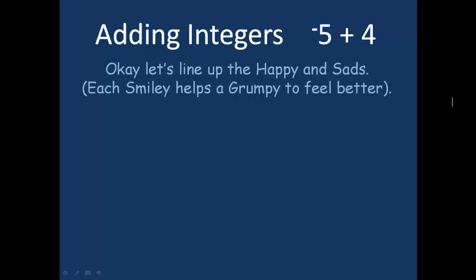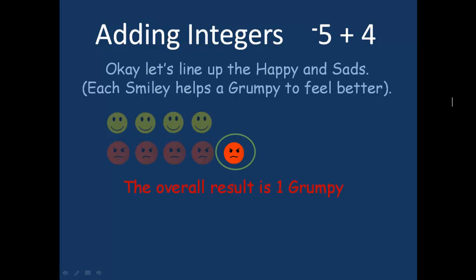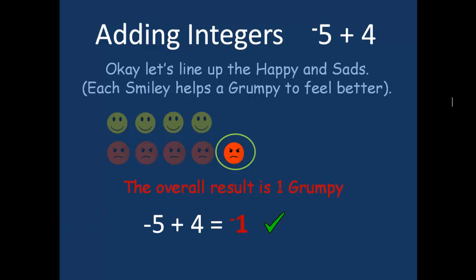Let's look at another sum: minus five plus four. We have four happy faces, and because we've got minus five — or negative five — we've got five grumpies. The overall result is one extra grumpy. Negative five plus four is an answer of negative one.